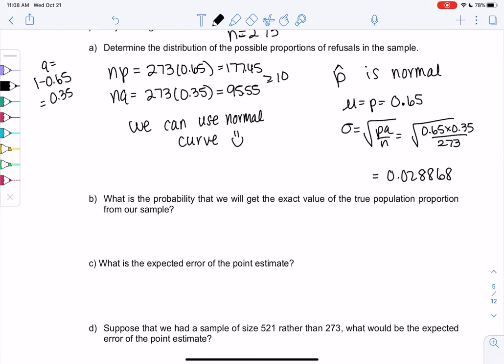What's the probability that we get the exact value of the true population proportion in our sample? So we get exactly 65%. It's a lot of words, but it's just saying, what's the chance we get exactly 65%? And we've gone over this. It's basically 0, right? It's not exact, but should be close.